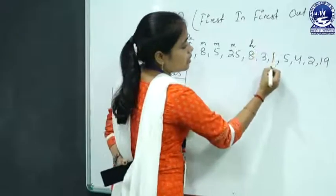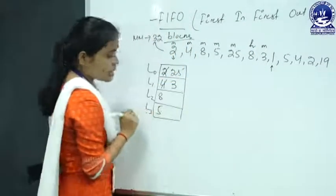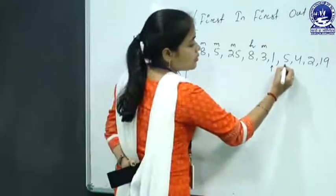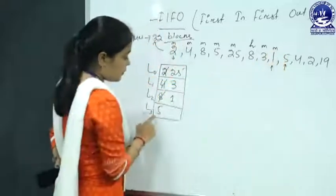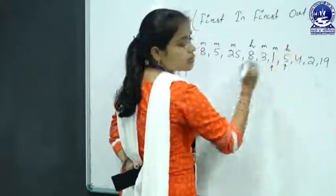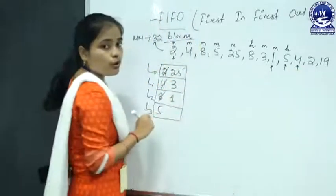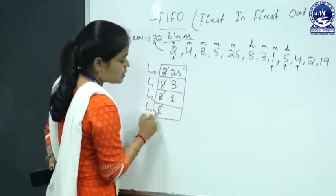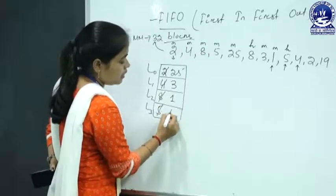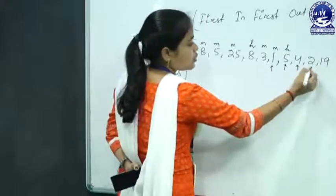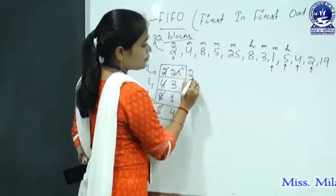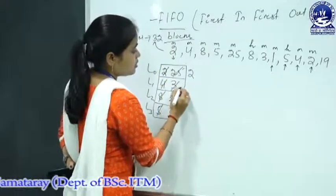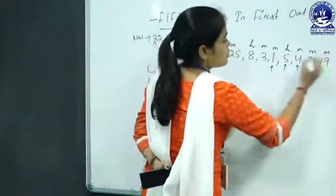The next block is 1 — it is a miss. Then 5 — 5 is present in cache, so it is a hit. Then 4 — it is a miss, replacing line 3's block. Then block 2 comes — it replaces block 25, also a miss. Then 19 comes — also a miss. The cache hit count here is 2, and cache misses are approximately 10.